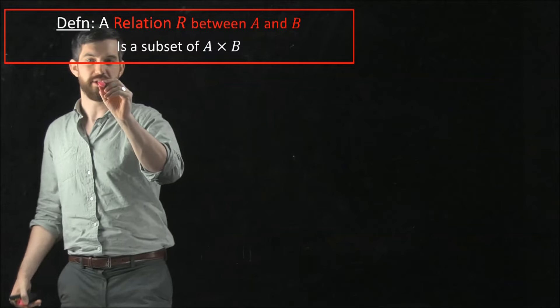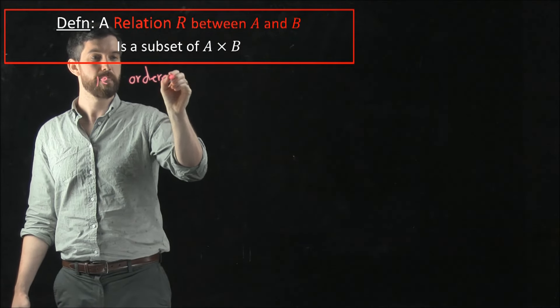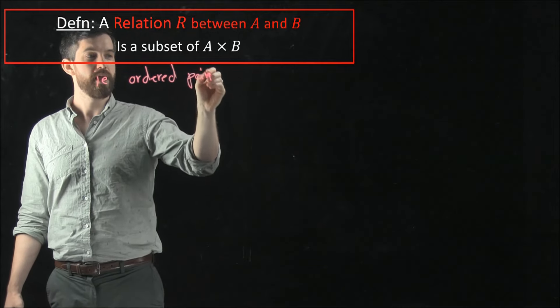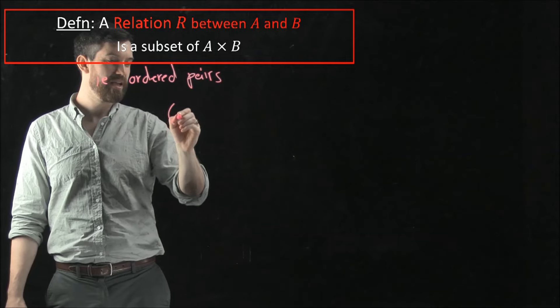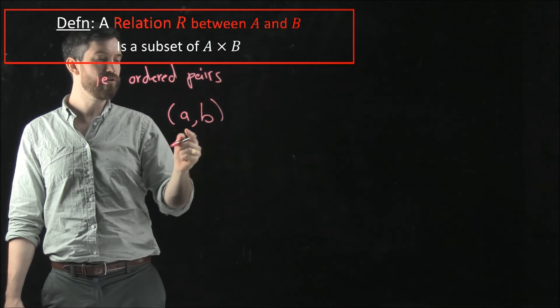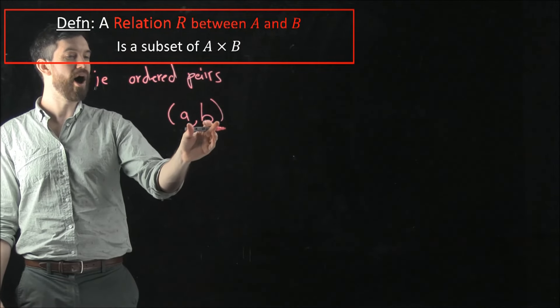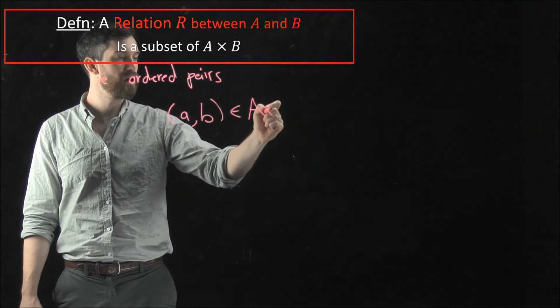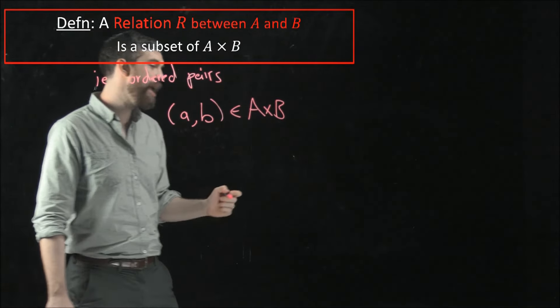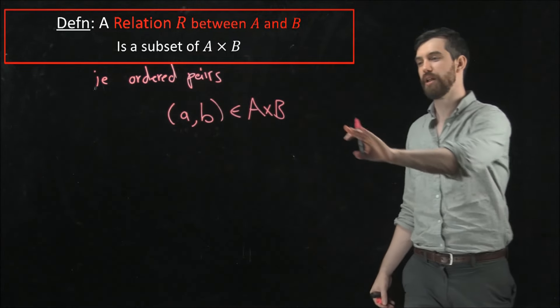what I'm meaning over here is i.e. ordered pairs. And my ordered pairs are going to be of the form, and I use little a and little b, I use lower cases when I'm denoting the elements, is of ordered pairs, and they are in the Cartesian product A times B, where A and B in capitals are denoting my sets.